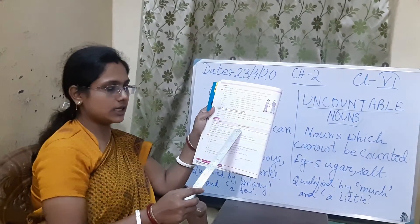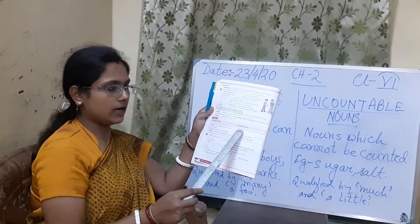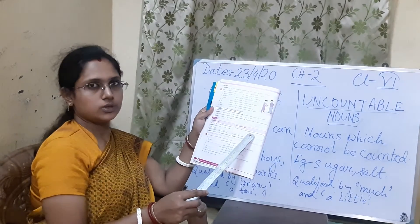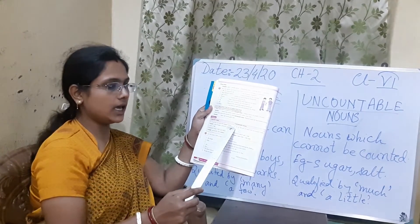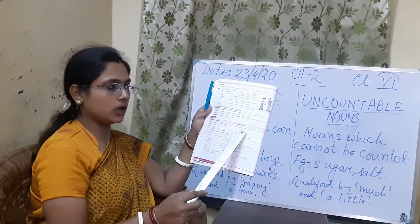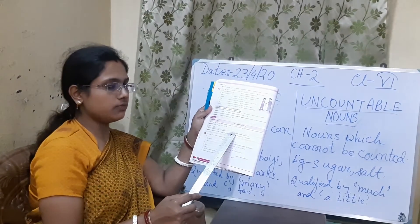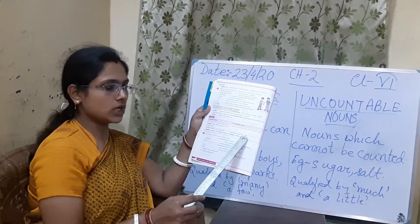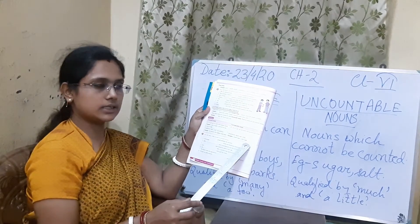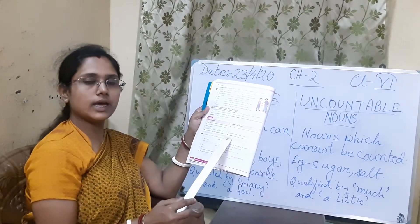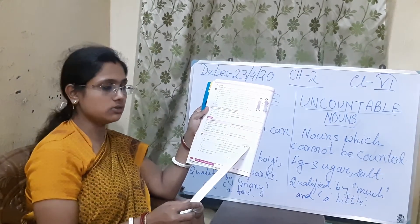For uncountable nouns, 'a', 'an', or 'one' are not used. They are qualified by 'much' and 'a little' — like 'much water' and 'a little sugar'. We cannot count water and we cannot count sugar.